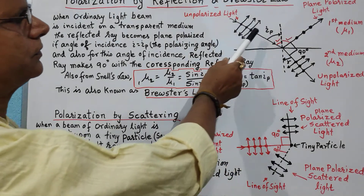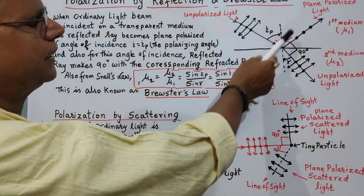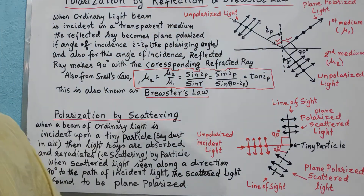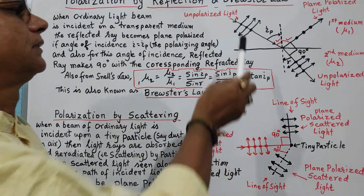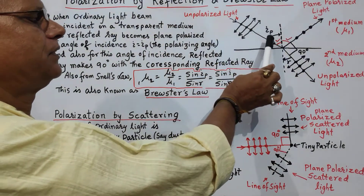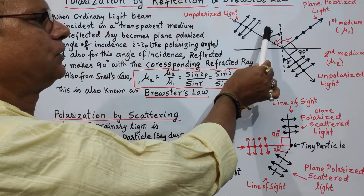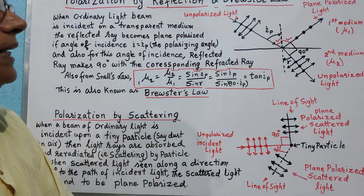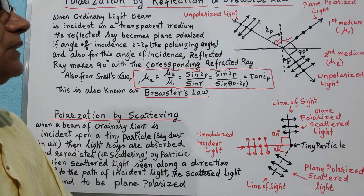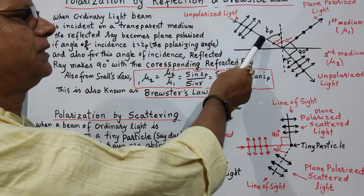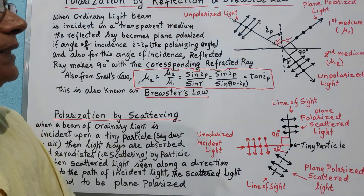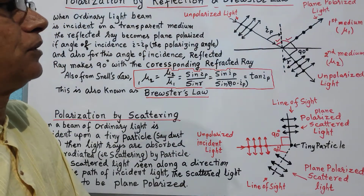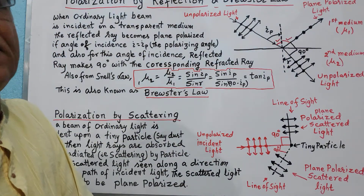Due to reflection, the light is found to be completely plane polarized when the angle of incidence is exactly equal to the polarizing angle for that medium. If the angle of incidence is different from the polarizing angle, the reflected light is still found to be partially polarized.